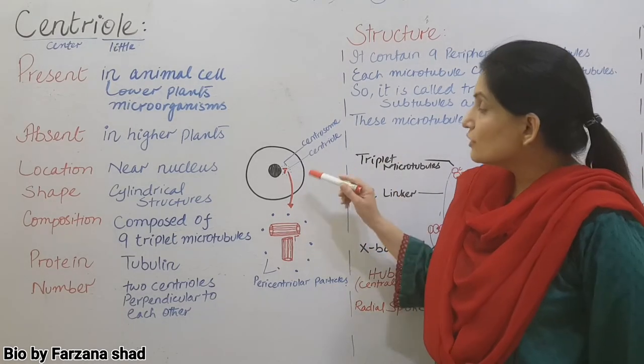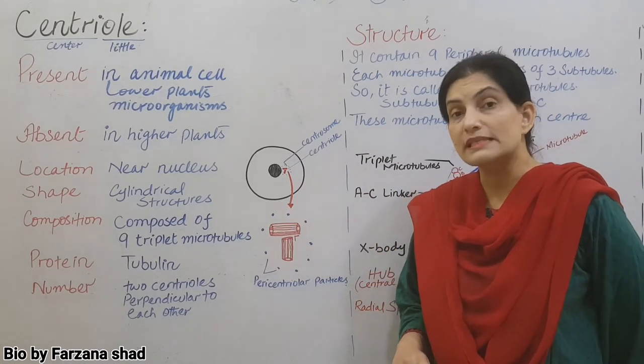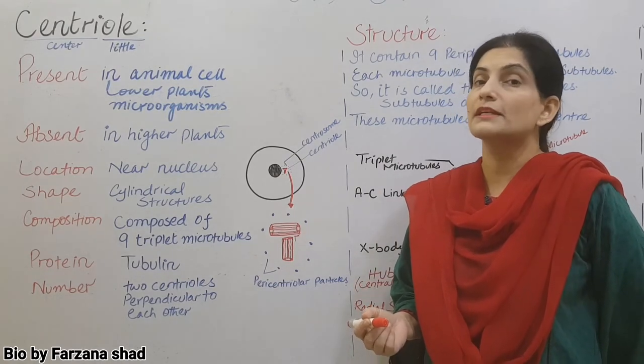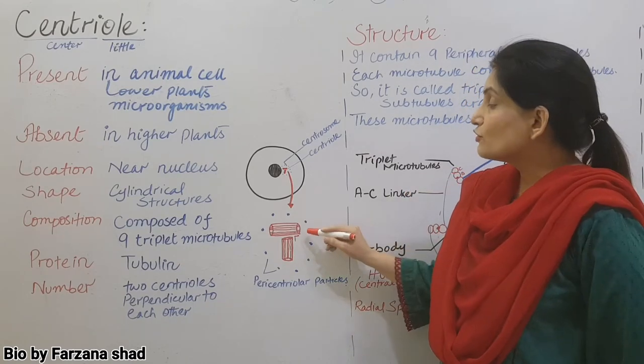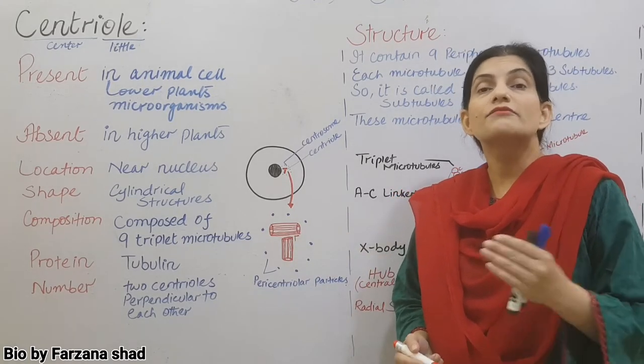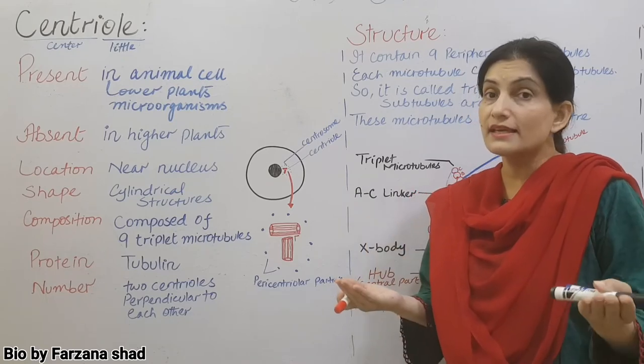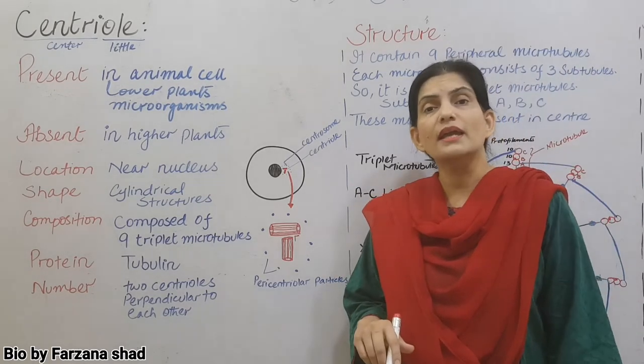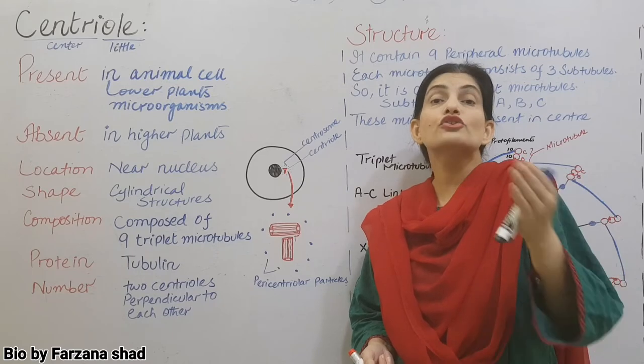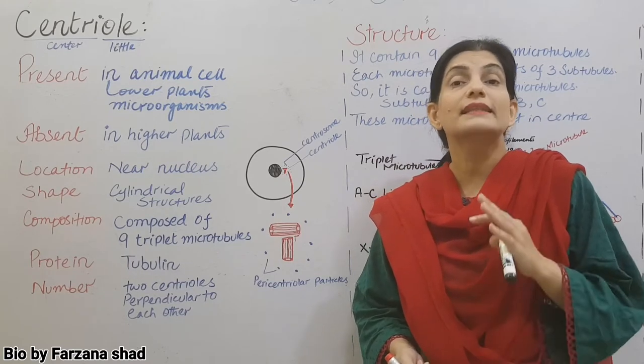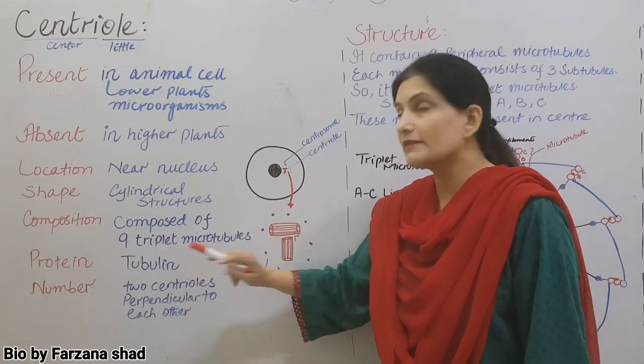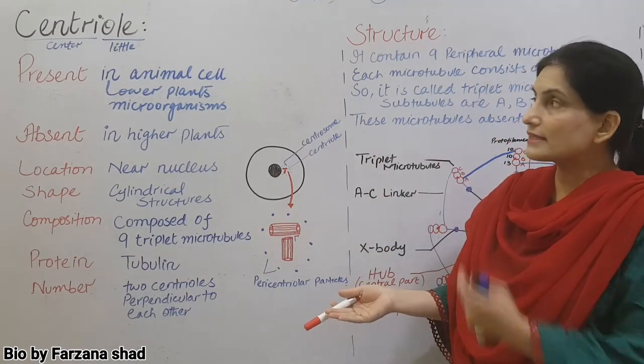Now composition. These centrioles are made of microtubules. We discussed this in the previous topic - microtubules, microfilaments, intermediate filaments. Remember, centrioles are made of microtubules. And inside it there are nine triplet microtubules. And the next thing is, if they are made of microtubules, which protein is involved? You remember, we discussed that the protein present in microtubules is tubulin protein. From tubule you should remember which protein is inside. Tubulin protein. So we've discussed its introduction.